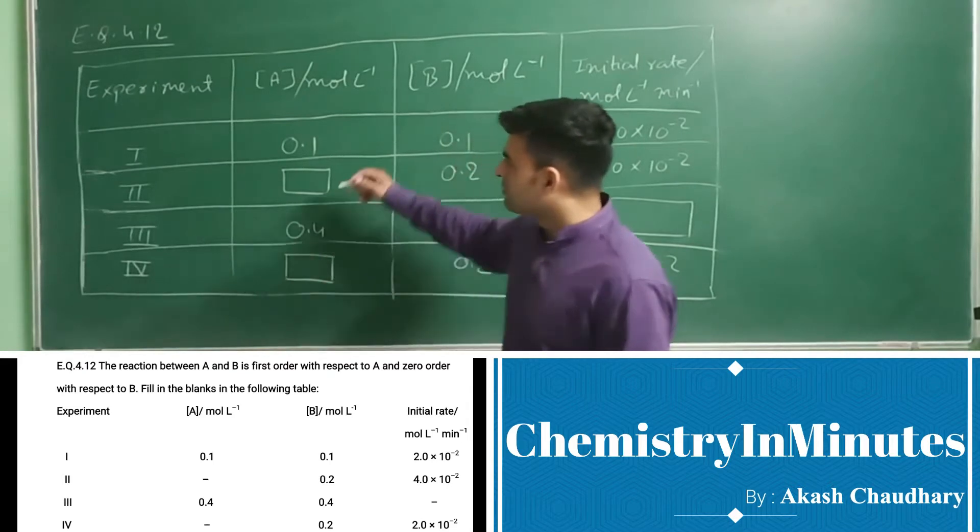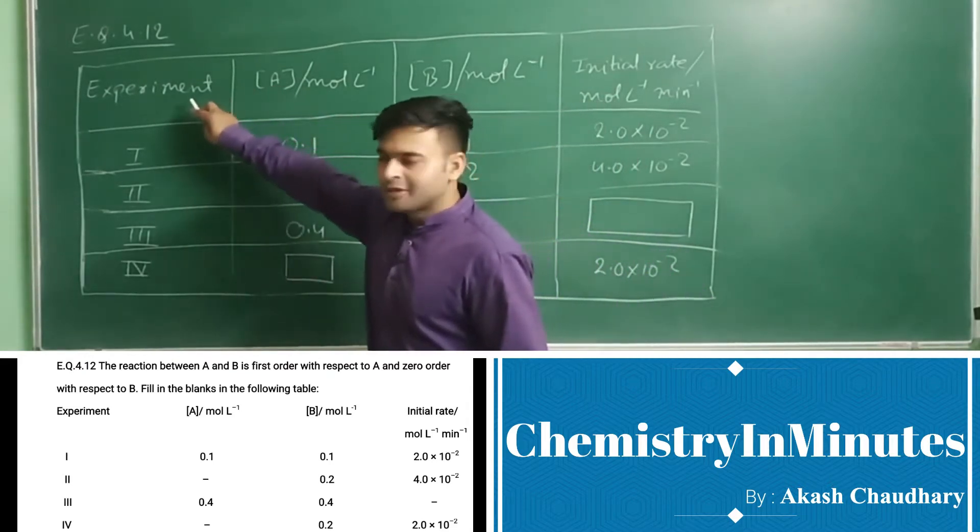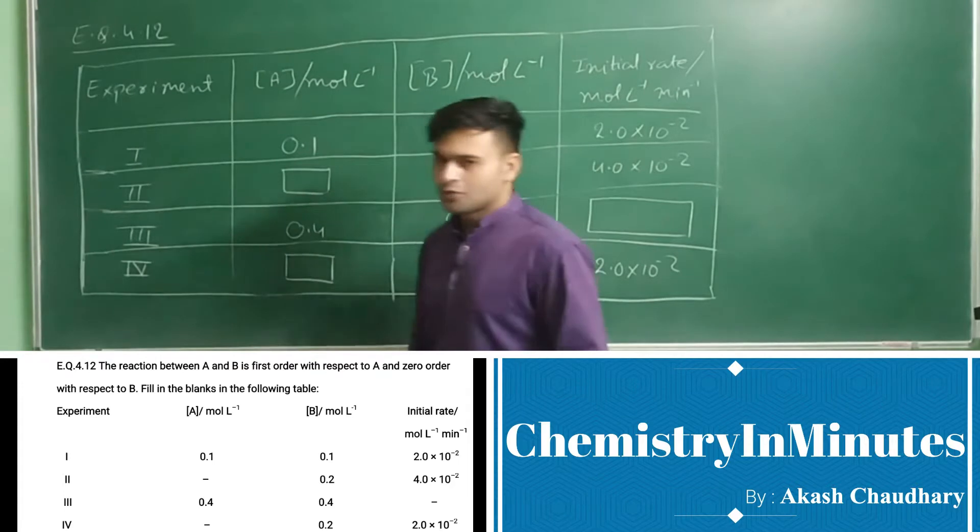The table is made on the board. In the first column there is experiment number: first, second, third and fourth.